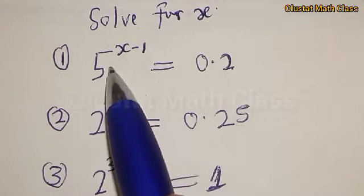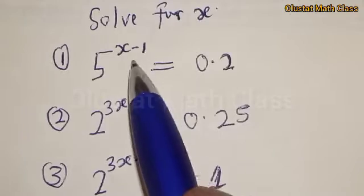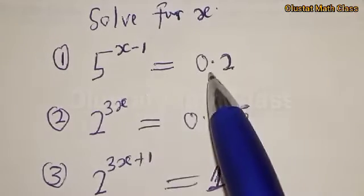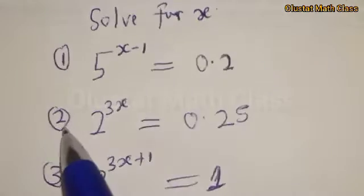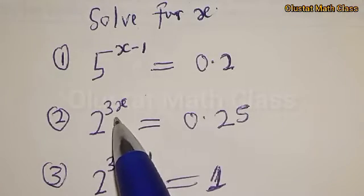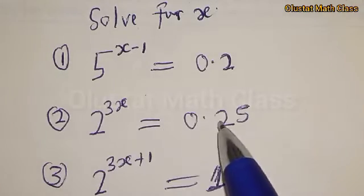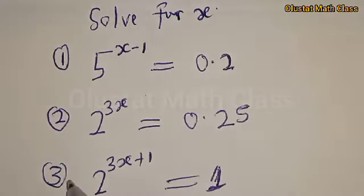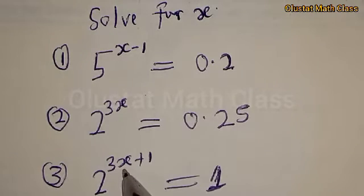Number 1: 5 raised to power x minus 1 is equal to 0.2. Number 2 is 2 raised to power 3s is equal to 0.25. And question number 3 is 2 raised to power 3s plus 1 is equal to 1.